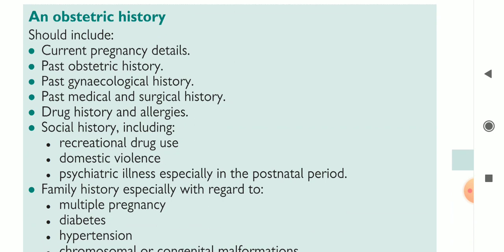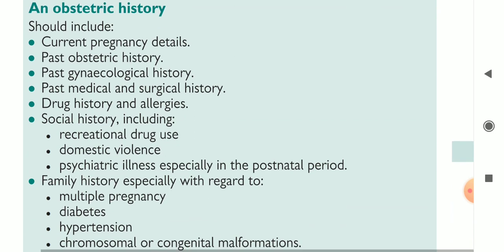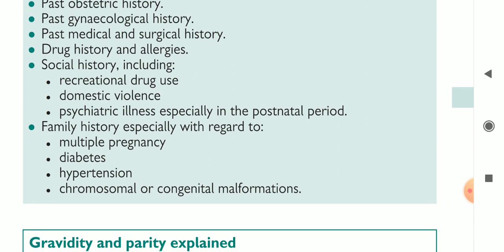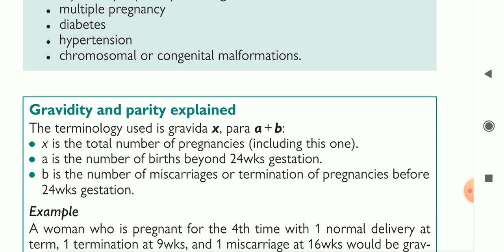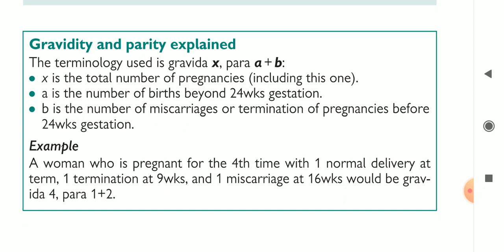The obstetric history should include: the current pregnancy in detail, past obstetric history, past gynecological history, past medical and surgical history, drug history and allergies, social history including recreational drug use and domestic violence, psychiatric illness especially in the postnatal period, and family history — particularly regarding multiple pregnancy, diabetes, hypertension, and chromosomal or congenital malformations.